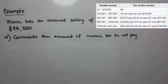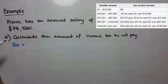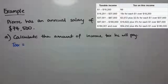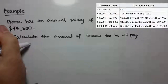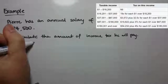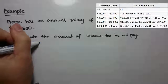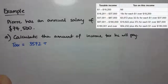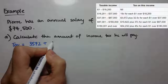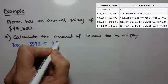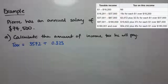Let's look at an example. Pierre has an annual salary of $74,500 and we want to calculate the amount of income tax he'll pay. The first thing we need to do is check his tax bracket. We can see he's in the third bracket, where he pays $3,572 plus 32.5 cents — that is, $0.325 — for every dollar over $37,000.